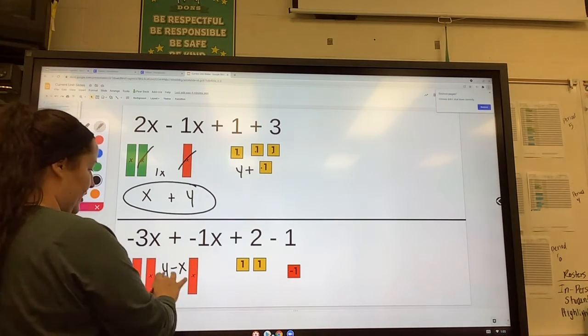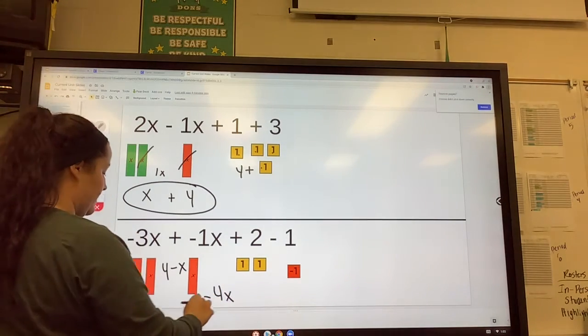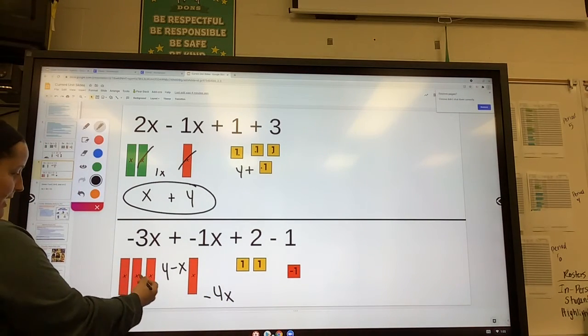Or if you just rearrange that, that would actually be negative 4x. Right? There are negative 4x's.